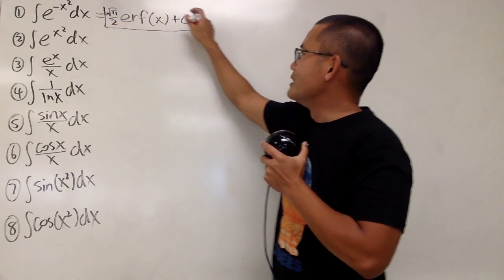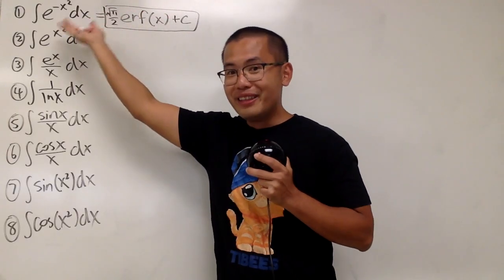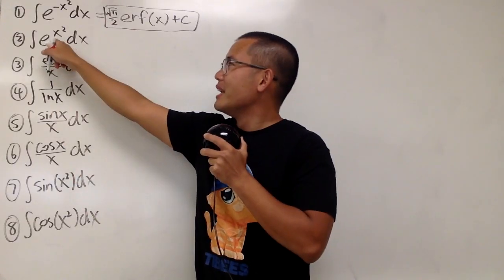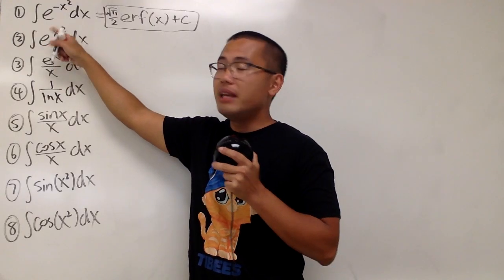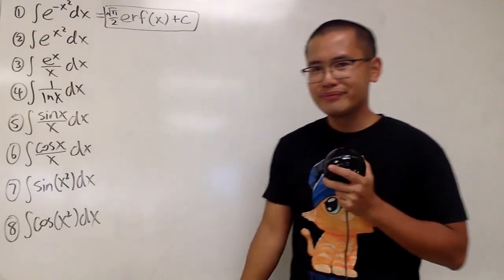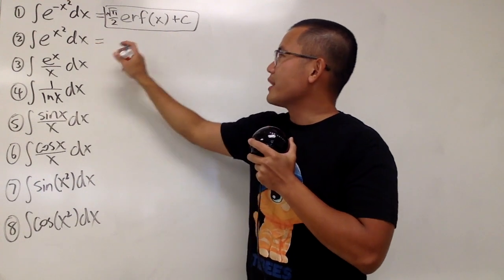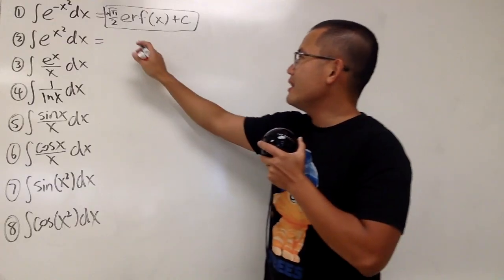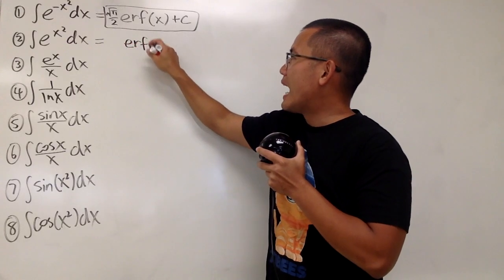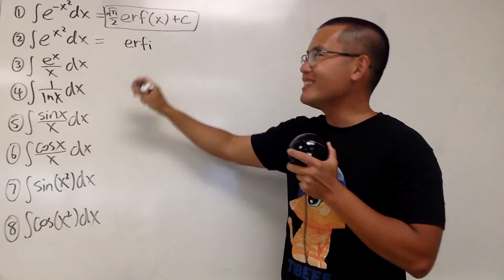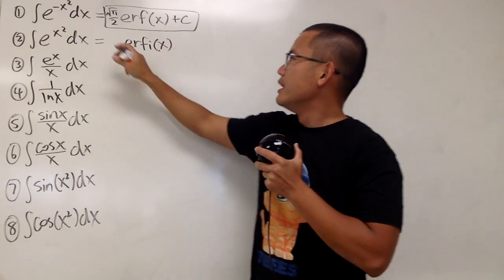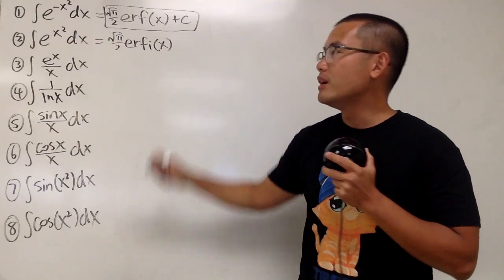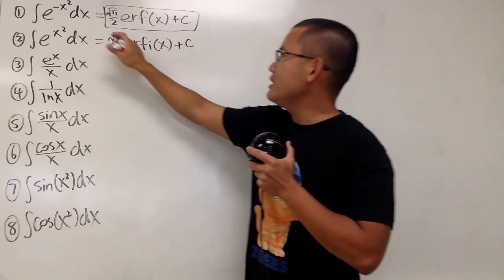For the second one, notice that here we have a positive x squared instead of negative x squared. In this case, this right here is what we call the imaginary version of the error function, and the name is erfi. The input is x. Again, you multiply by the constant, namely square root of pi over 2, and we add a plus C.